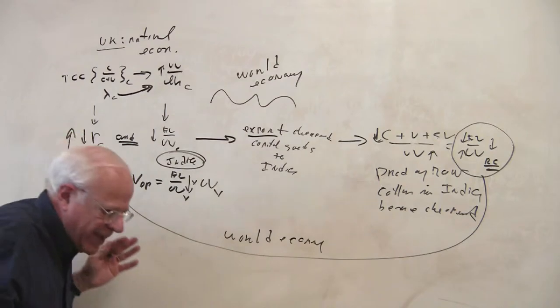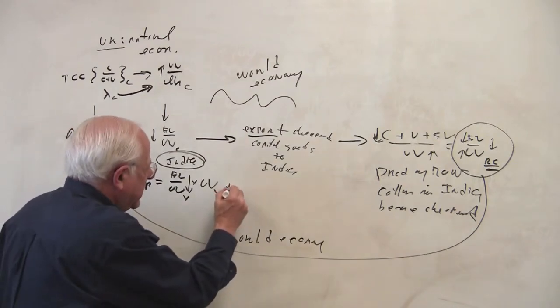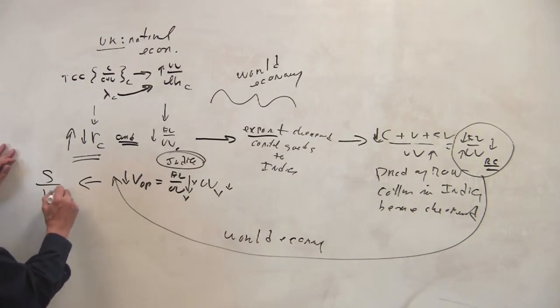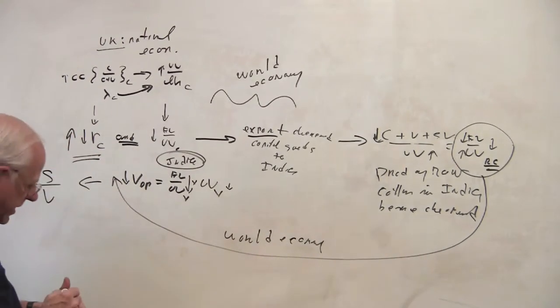If you couple that with the attempts of the British, perhaps also to decrease the real wage, you have then a strong argument of why the rate of exploitation is rising in Britain during this period of time, pushing up the rate of profit.